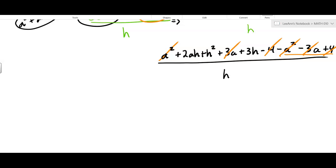So it simplifies down. Now I have 2AH plus H squared plus 3H all over H.